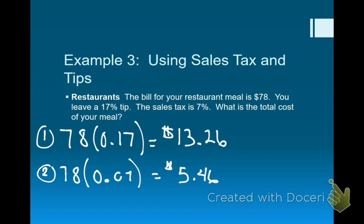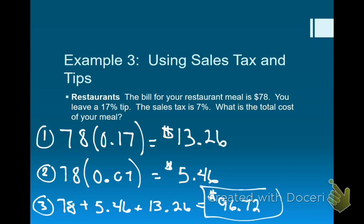All three of these examples really gel together around the main concept: take the original amount, multiply it by a percentage, and find your new amount. That's going to wrap it up for part one of section 7.6. We're going to do one more example tomorrow that's very different from the first three, so I'll spend a little more time on that, and then we'll wrap up the rest of the chapter later this week.